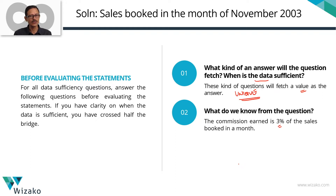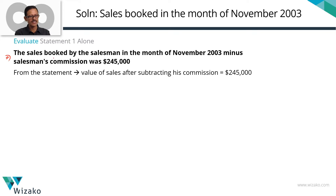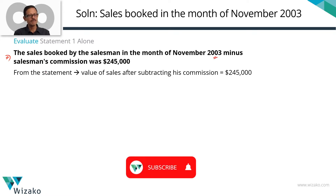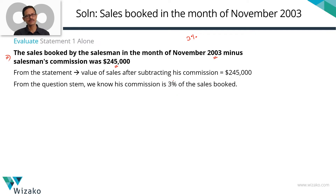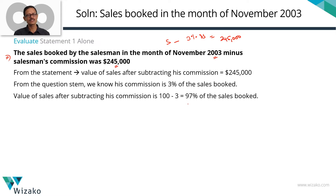Let's step into statement 1. Evaluate statement 1 alone and see whether that is sufficient. Statement 1 says: the sales booked by the salesman in the month of November 2003 minus the commission was $245,000. So, sales after subtracting the commission is $245,000. The commission earned is 3% of the sales. Therefore, sales minus 3% of sales equals $245,000, which means 97% of the sales booked equals $245,000.